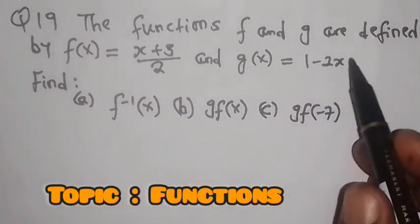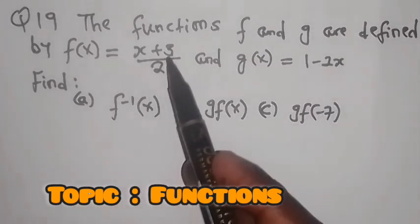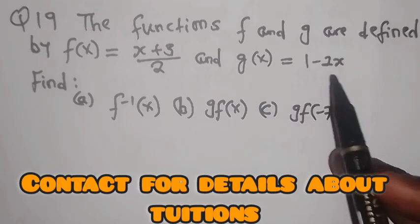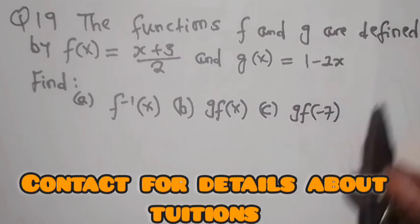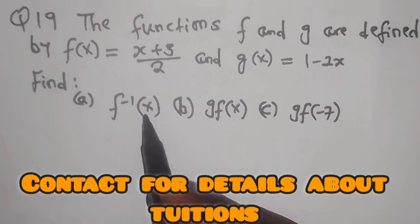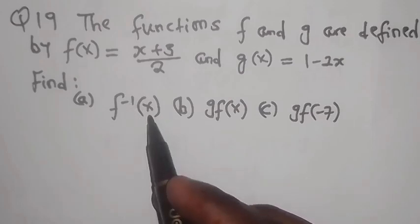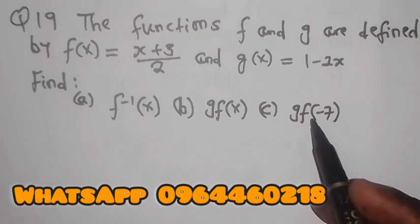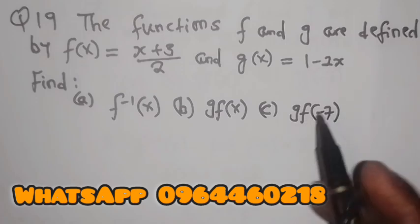So the functions f and g are defined by f(x) equals x plus 3 over 2 and g(x) equals 1 minus 2x. Find: (a) f inverse of x, (b) g composite f of x, (c) g composite f of negative 7.